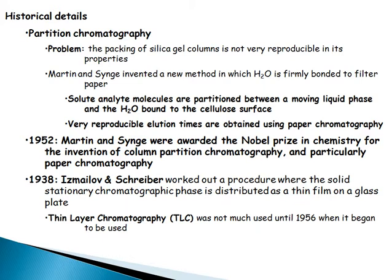In 1952, Martin and Synge were awarded the Nobel Prize in Chemistry for the invention of partition chromatography, and particularly paper chromatography. In 1938, Izmailov and Shraiber worked out a procedure where the solid stationary phase is distributed as a thin film on a glass plate — thin layer chromatography — which was not much used until the 1950s.